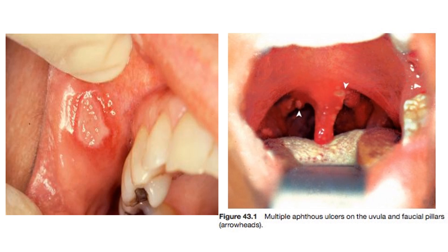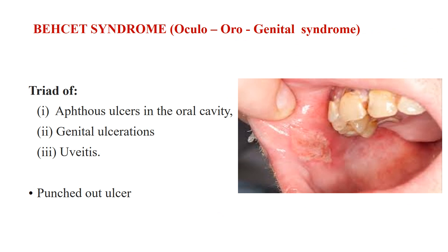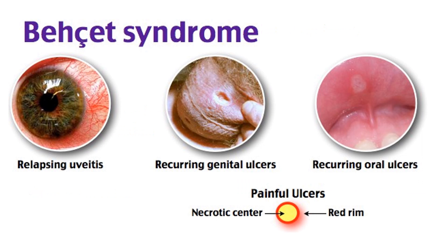These pictures show a large aphthous ulcer on the right side and multiple ulcers visible on the left. Behçet syndrome, or oculogenital syndrome, presents with a triad of aphthous-like ulcers in the oral cavity, genital ulcerations, and uveitis. The edge of the ulcer is characteristically punched out. There may also be lesions in the skin, joints, and central nervous system.